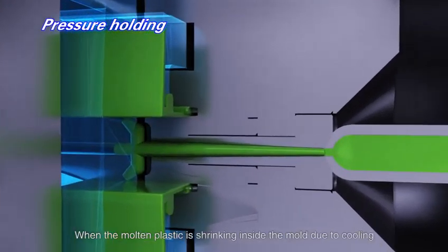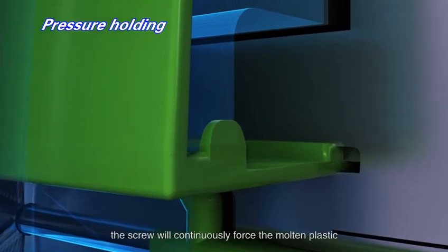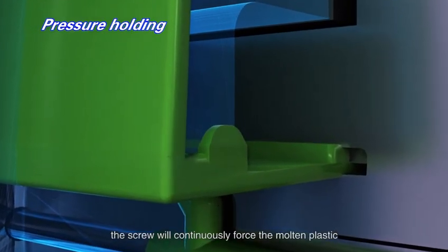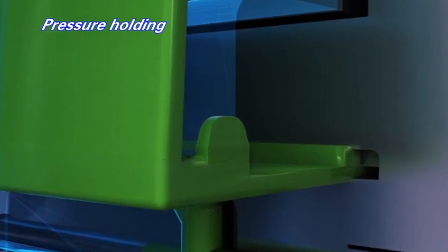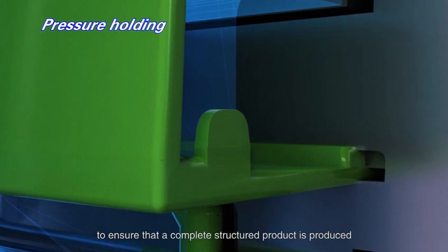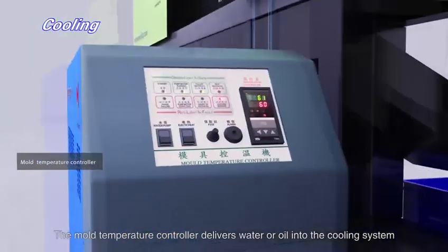When the molten plastic is shrinking inside the mold due to cooling, the screw will continuously force the molten plastic into the mold for replenishment to ensure that a complete structured product is produced. The mold temperature controller delivers water or oil into the cooling system to maintain the mold temperature as specified.